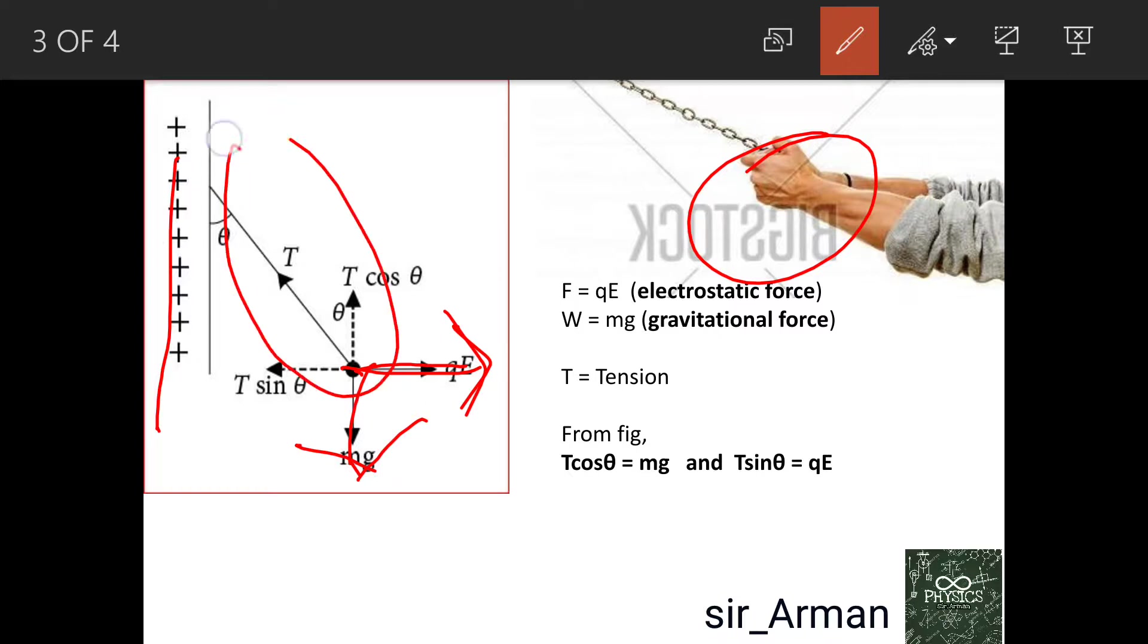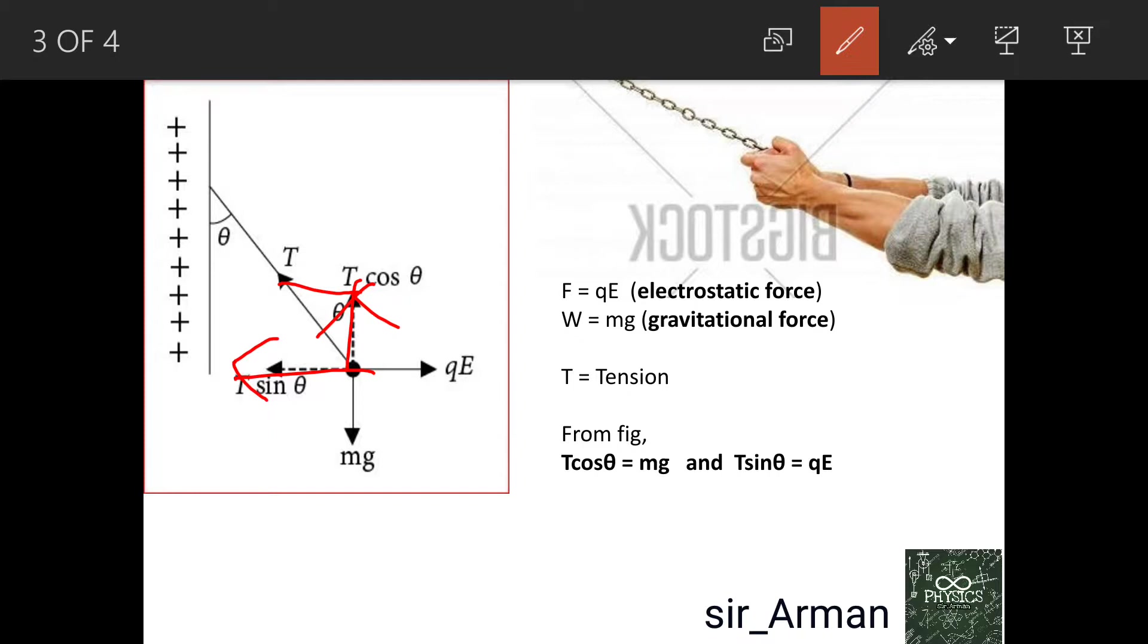Now if we find the horizontal and vertical components of the tension, we find that this component is T cos theta and this component is T sin theta. The charge is in equilibrium, so the vertical components equal each other and the horizontal components equal each other.